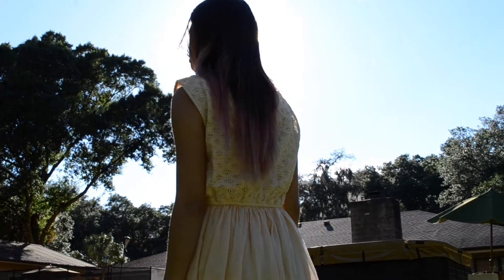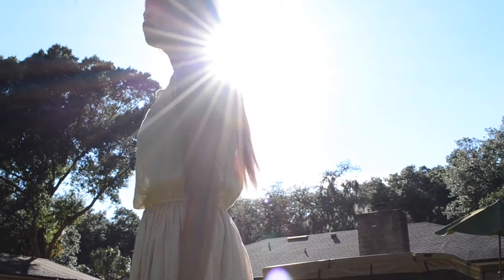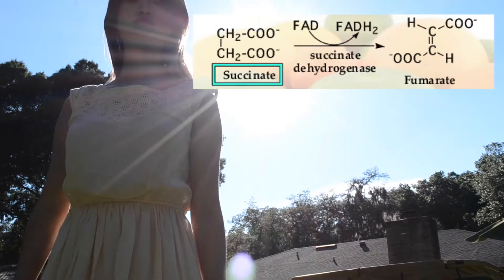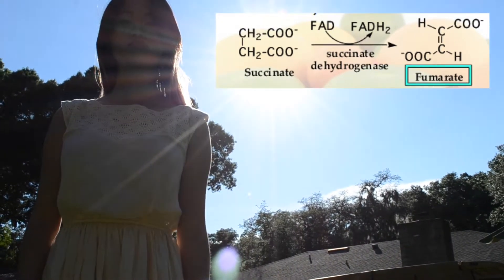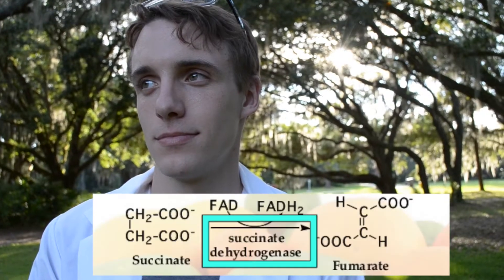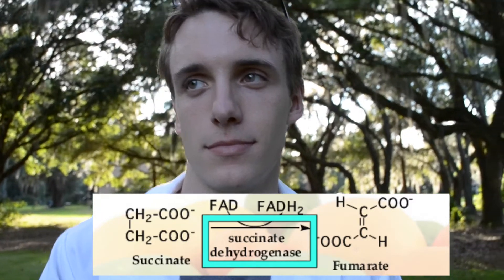The next step is to take succinate and turn it into fumarate, using succinate dehydrogenase.